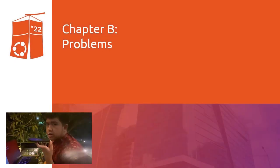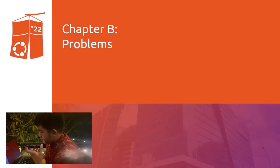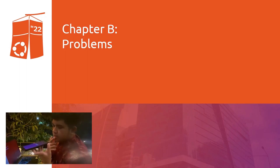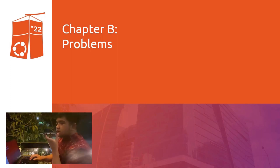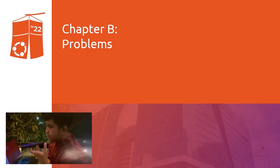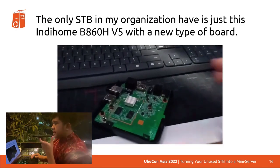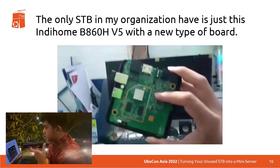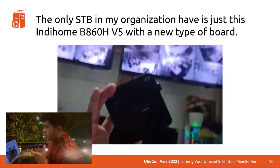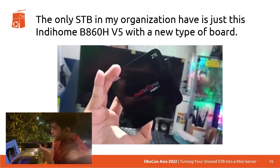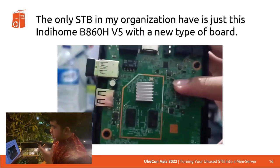Now let's go to Chapter B: the problem. The only STB my organization has is the Indihome B860H version 5 with a new type of board. This was left unusable because most of our TVs at school are already smart TVs running Android. So the organization gave me these STBs which were left unusable. I noticed it was running a new type of board when I tried to unbox it. You can see the USB port and HDMI port. The bad news is that we can't directly root the device.